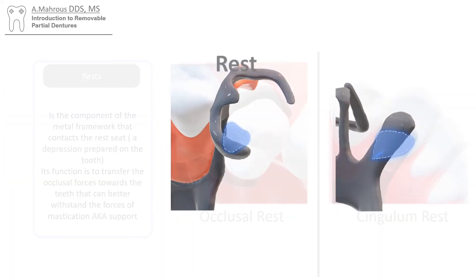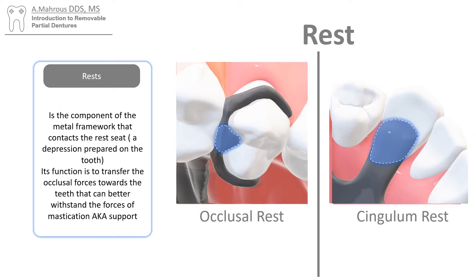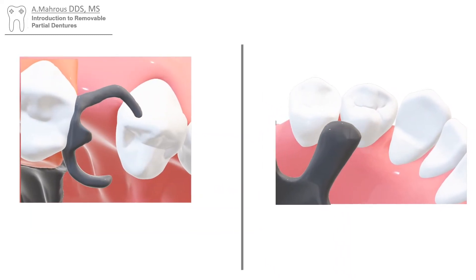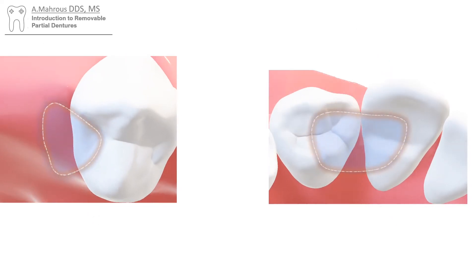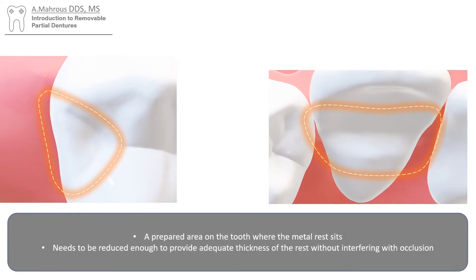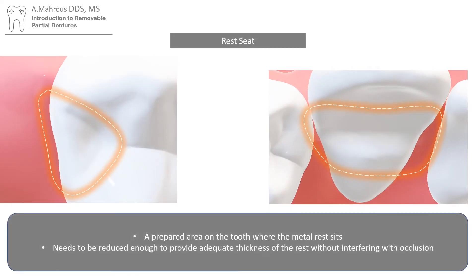Now let's talk about each of those separately, starting with the rest. The rest is a component of the metal framework that rests within the rest seat, which is a prepared area on the tooth. Its main function is to direct the occlusal forces along the long axis of the teeth. If we move away the rests, you can see the rest seats underneath — prepared areas on the teeth that you would remove with a burr to create space for the rest.